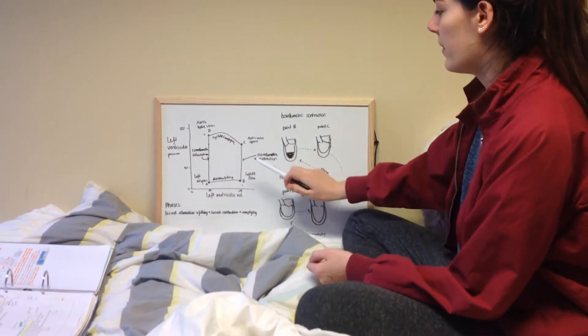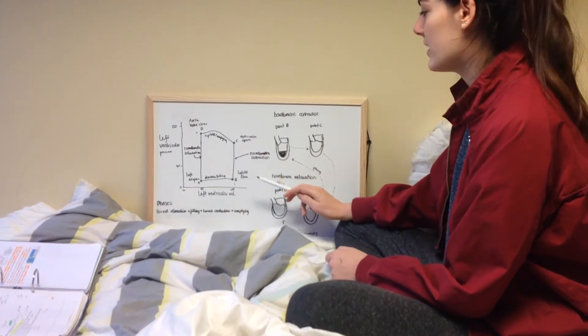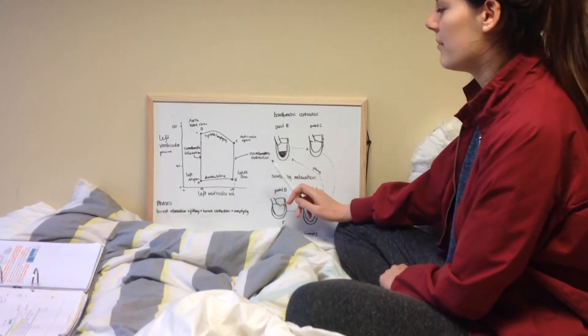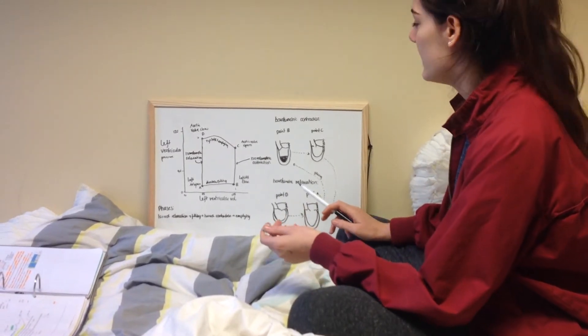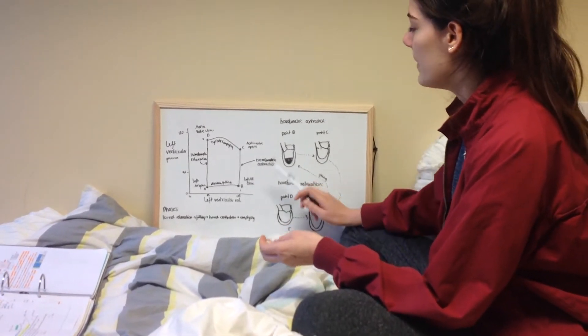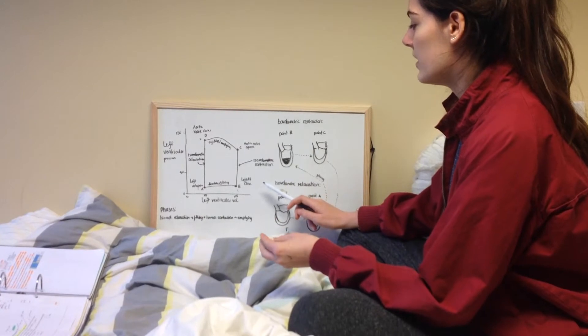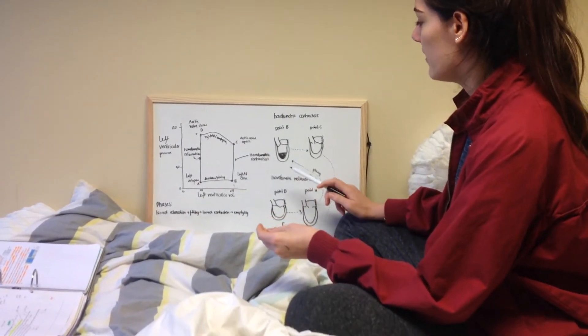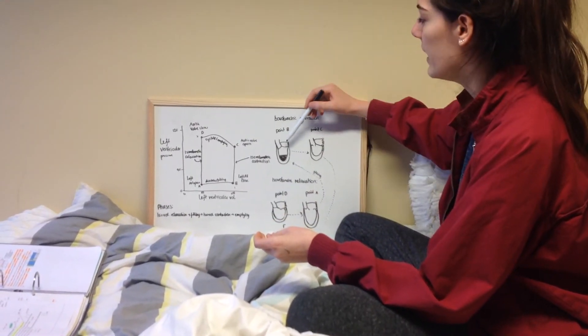At this point, isovolumetric contraction begins. Isovolumetric basically means that the volume changes but the pressure stays the same. At the beginning of isovolumetric contraction, the left atrioventricular valve will be closed.